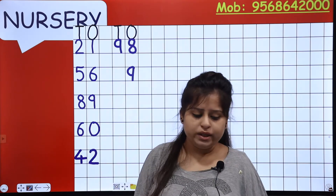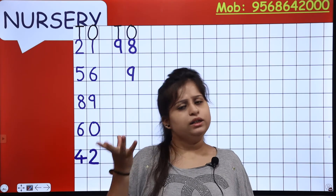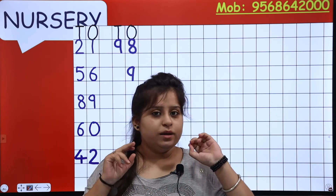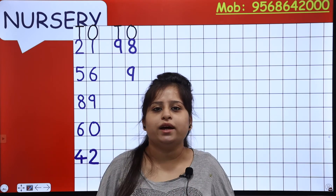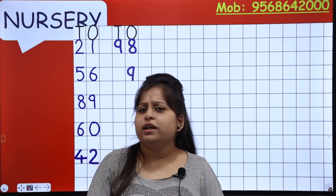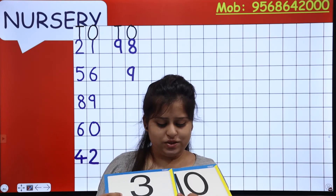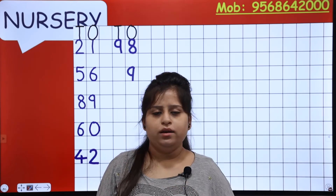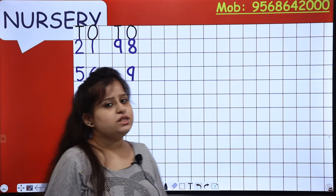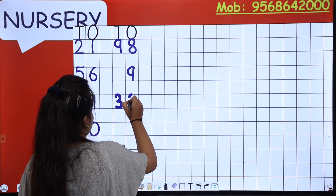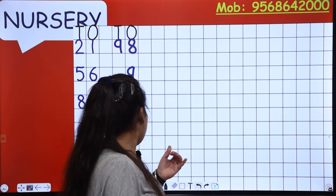Tell me: what comes after 2, 9 — twenty-nine? Which number comes after twenty-nine? What comes after 9? Zero. What comes after 2? Three. So three, zero — thirty. Fine, write it down. Three, zero — thirty.